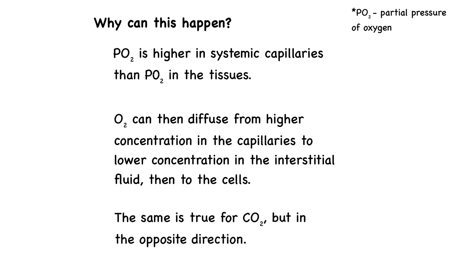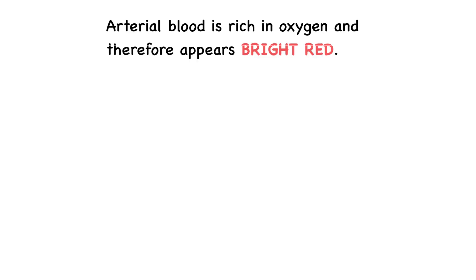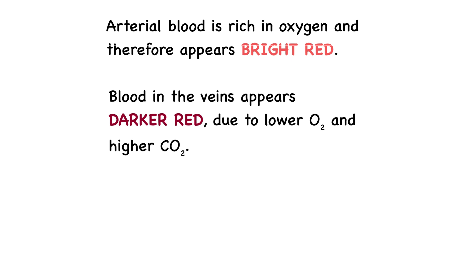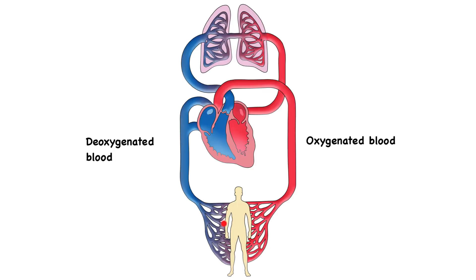This exchange is why arterial blood appears bright red — it's rich in oxygen. By the time the blood reaches your veins, it's darker due to the lower oxygen content and higher levels of carbon dioxide. The deoxygenated blood returns to the heart through the veins and is then pumped to the lungs, back to the heart, and then back to the body for another cycle of internal respiration.